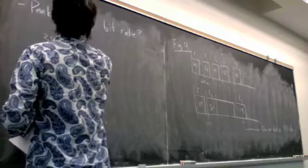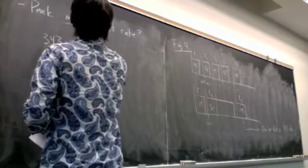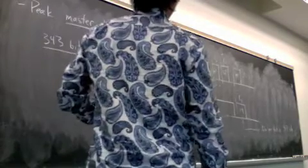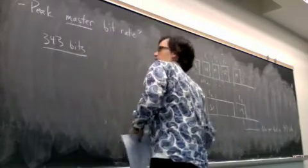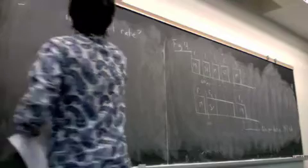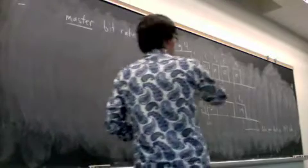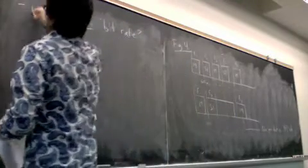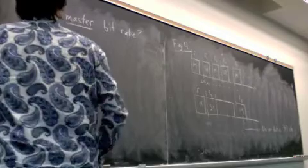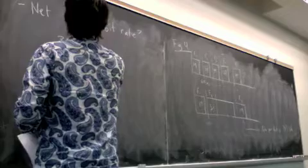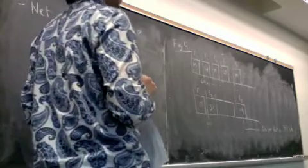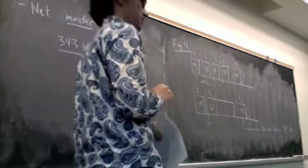343 bits divided by, sorry, that's not what I wanted. I wanted net master bit rate. So yeah, you're right. It would be 343 minus the guard, but let's talk about the net master bit rate. In which case it's 343 bits divided by what? How often does the master get to send 343 bits?